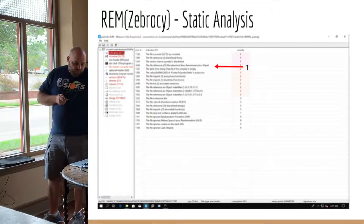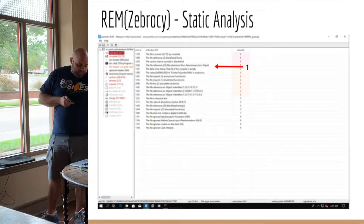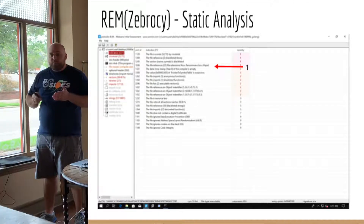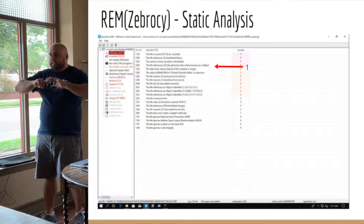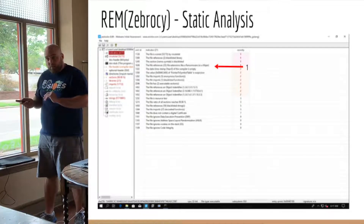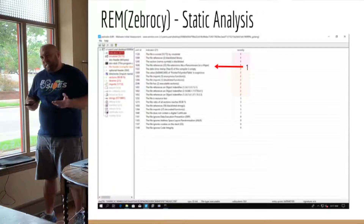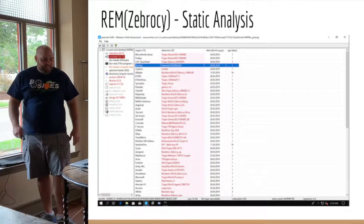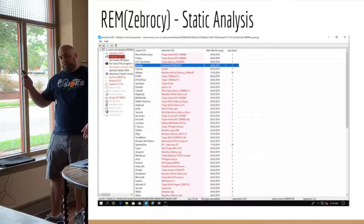Going back to the beginning, we've re-run PE Studio. The point is — let's say you had a sample that was encrypted with some kind of anti-analysis technique. Once you get that out of the way, always run back through these tools because you may end up with different results. Now we have more vendors detecting it — instead of 25 vendors, now 52 out of 72 vendors identify this as Zebrosi.